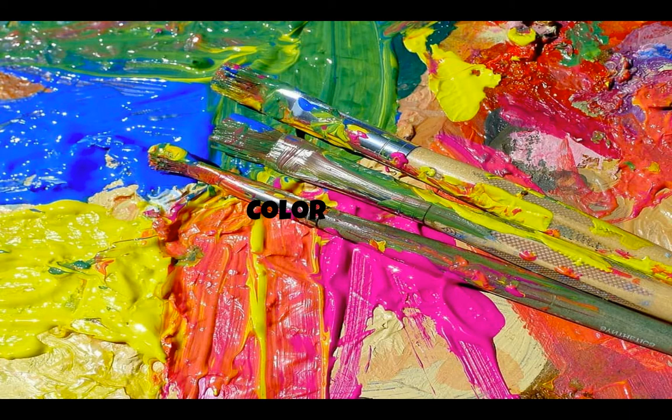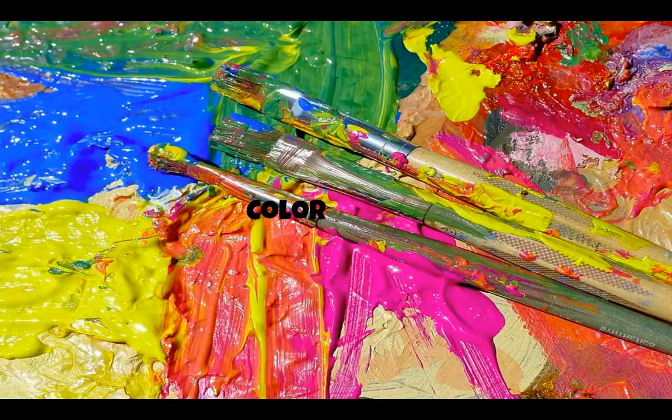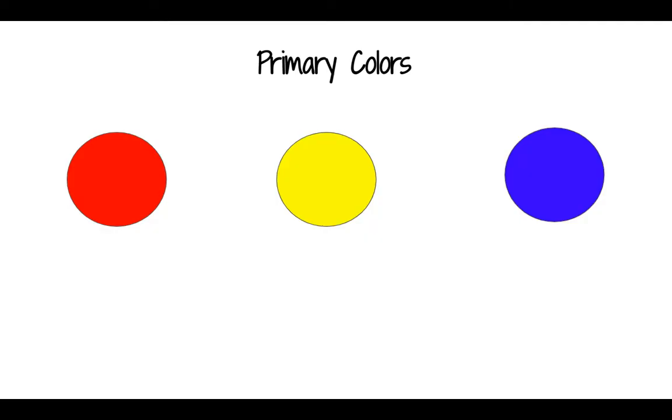Color. Color is a sensation produced by various rays of light of different wavelengths. We have primary colors: